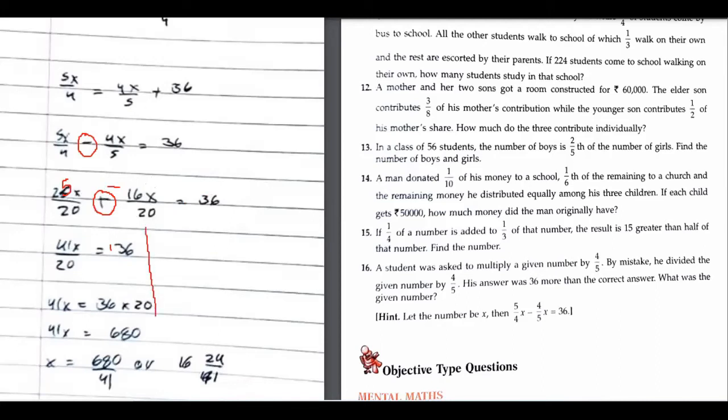Quickly do the correction and tell me. Now tell me what is the correction? 9x. 9x/20 equals 36.